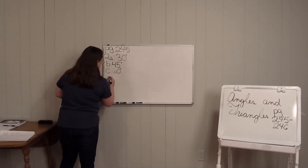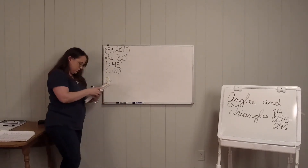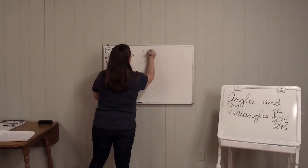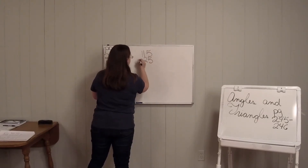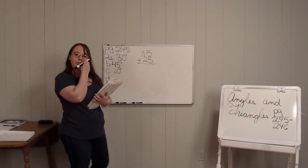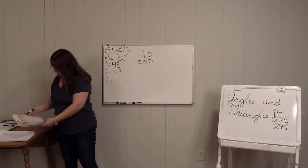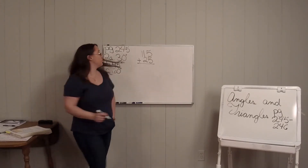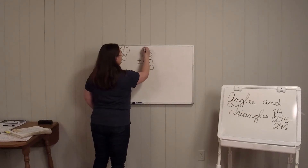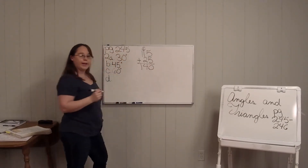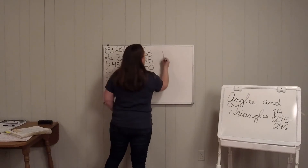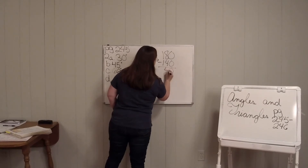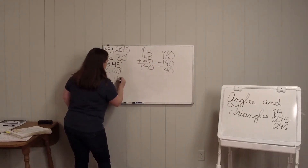So if you look at D, it gives you 115 and 25. Add them together and you get 140. Then you're going to take your straight angle and subtract 140 from that, and you get 40 degrees as your missing angle.